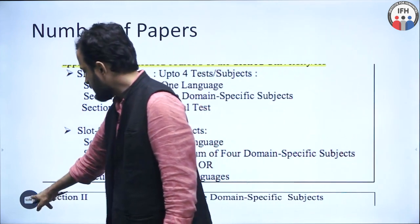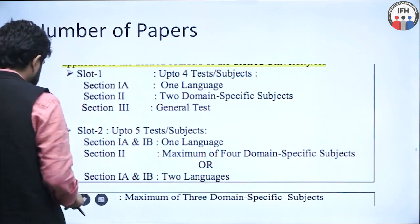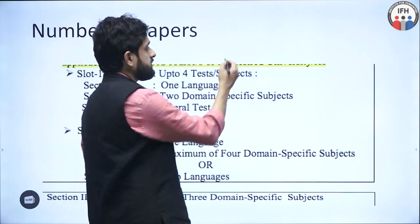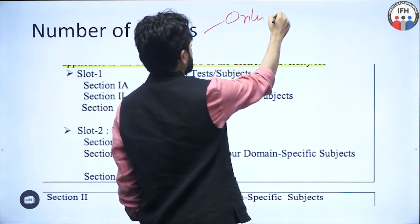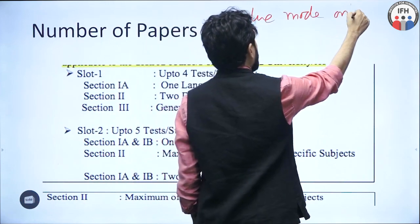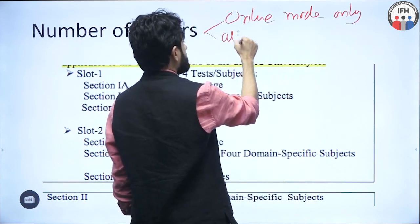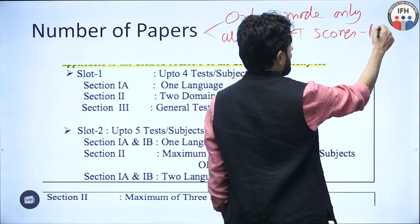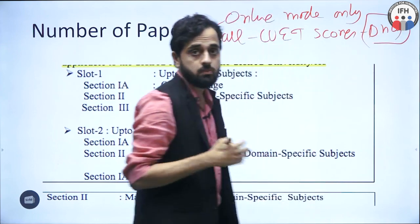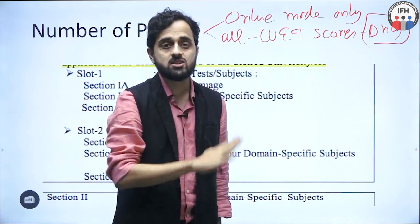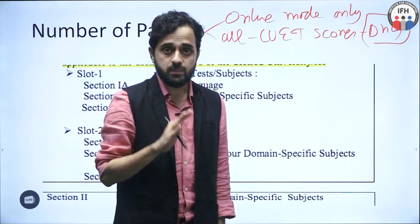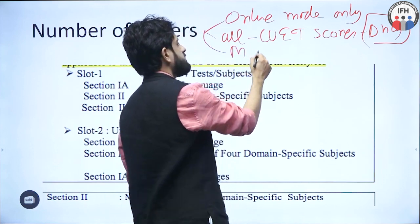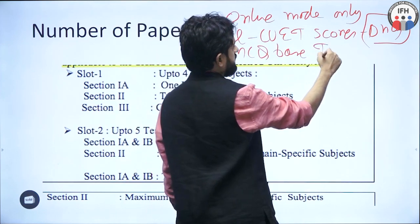Let's first talk about the number of papers in this examination. The test is going to happen only in online mode. All admissions in Central Universities will be based on CUET scores only. For example, in Delhi University, admissions were done on 12th board marks basis. But now, admissions will be done only on the basis of the CUET score. The CUET test is an MCQ based test done in online mode.